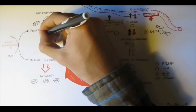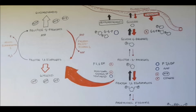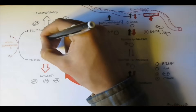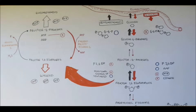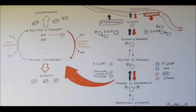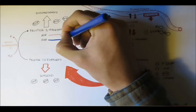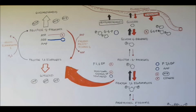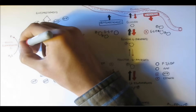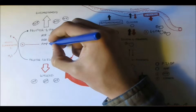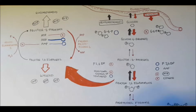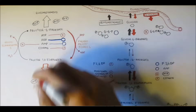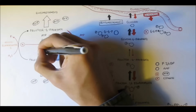Let's go over what regulates these two enzymes again. ATP will inhibit phosphofructokinase 1 because we don't want to promote glycolysis to make more ATP when we already have a lot. However, ADP will stimulate phosphofructokinase 1 because high amounts of ADP need to convert to ATP through glycolysis. AMP will inhibit fructose bisphosphatase 1 but stimulate phosphofructokinase 1 for the same reason. And also, citrate will inhibit phosphofructokinase 1.